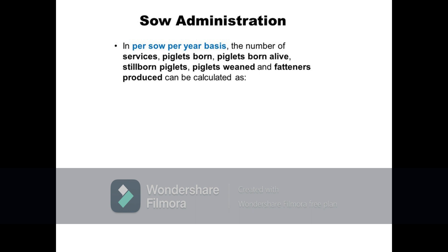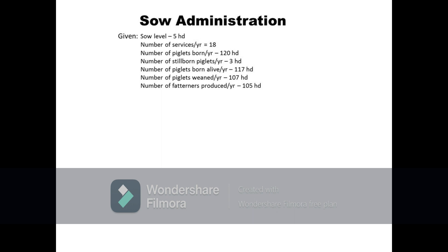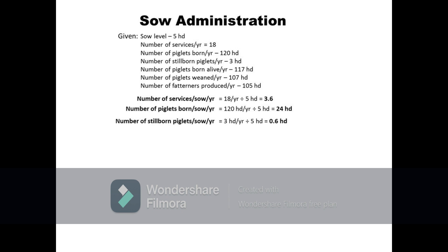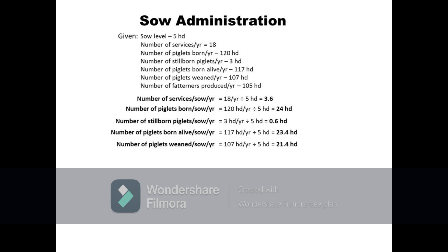Meanwhile, the per-sow per year basis of the performance indices can be calculated as the calculated value on a per year basis divided by the sow level. Such that a 5-sow level farm with per-year values of 18 services, 120 piglets born, 3 stillborn piglets, 117 piglets born alive, 107 piglets weaned, and 105 fatteners produced has: 3.6 services per sow per year, 24 piglets born per sow per year, 0.6 stillborn piglets per sow per year, 23.4 piglets born alive per sow per year, 21.4 piglets weaned per sow per year, and 21 fatteners produced per sow per year.